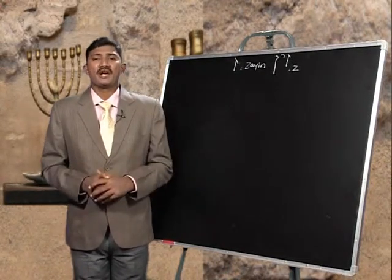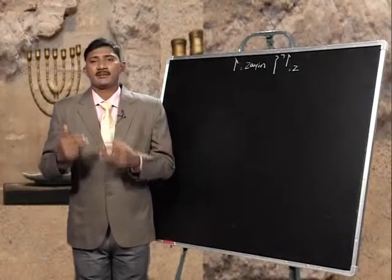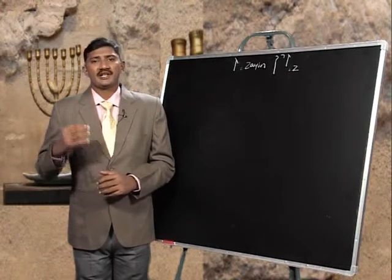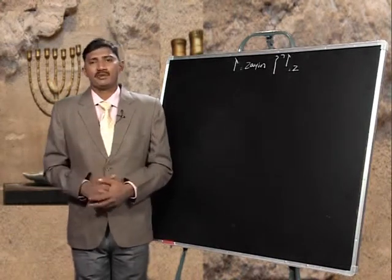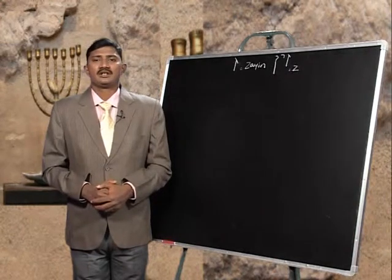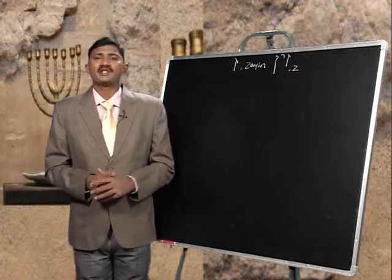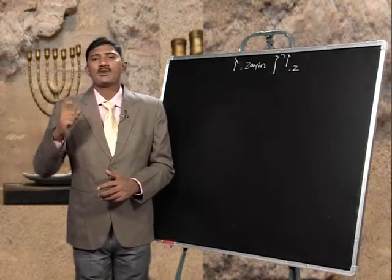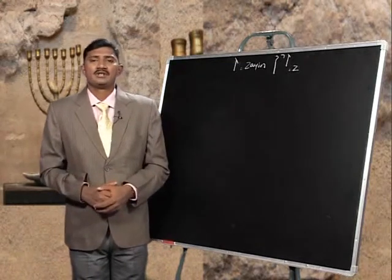The sixth letter is Vav, which is a picture of a hook — which connects and brings a link between things. The message we get is about the creation of this world, and it is the number of man in the Bible, because man was created on the sixth day. Its numerical value is number 6.